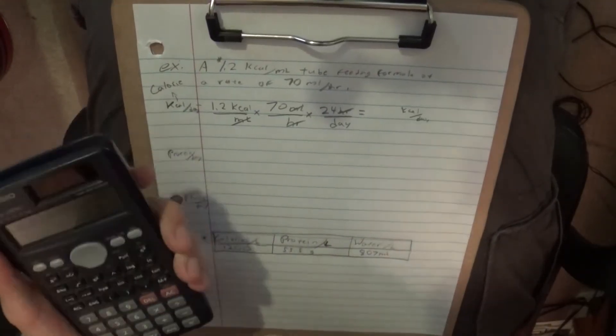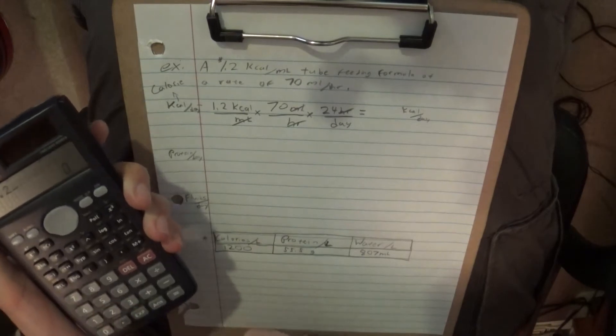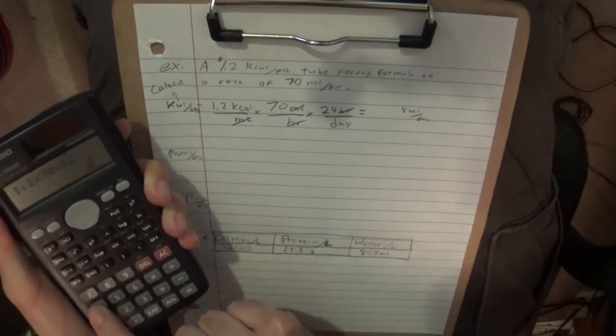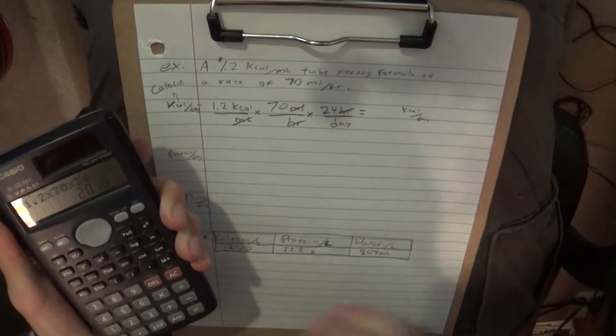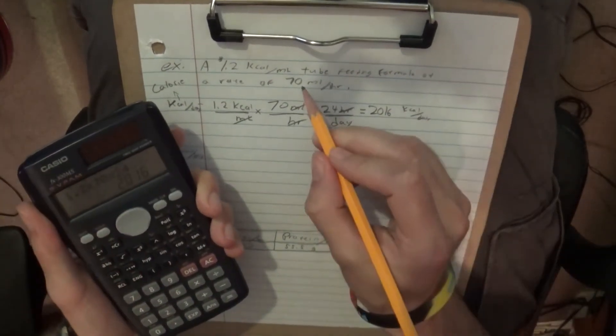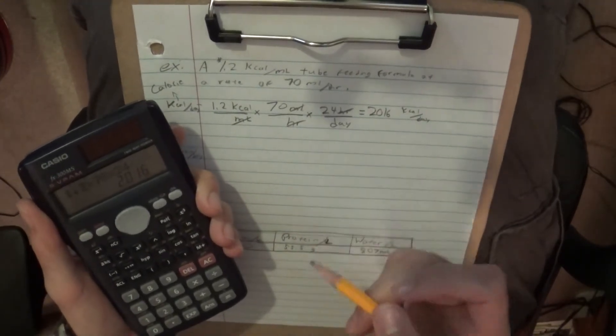So we get our calculator. And we type in 1.2, multiply it by 70, multiply that by 24. And we get 2,016 kilocalories per day at the rate in which we are pumping the tube feeding formula.